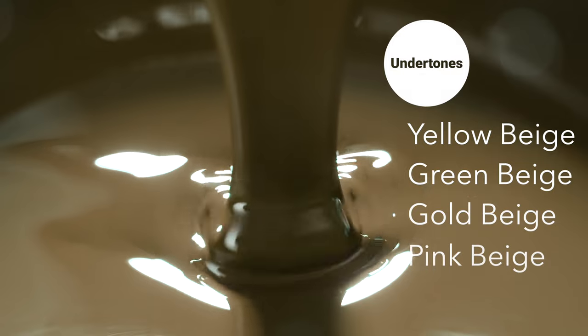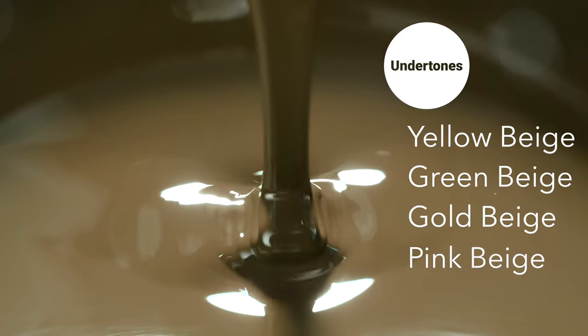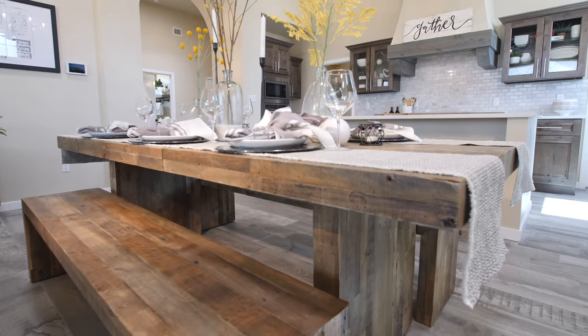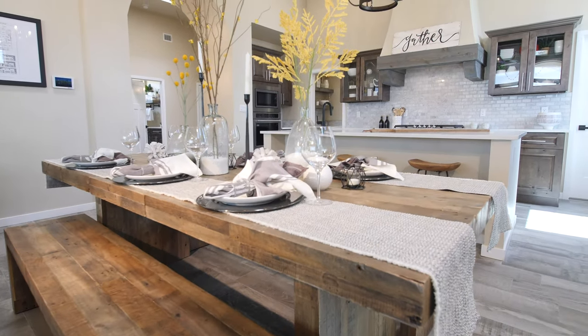If you're trying to find the perfect beige paint color for your home, the most important thing you need to do is identify the undertone of the beige paint color. Beiges come in different undertones, such as yellow beiges, green beiges, gold beiges, pink beiges, and more. All of these undertones will play a key role in how the paint color looks in your home, which is why it's so important to get a sample and compare it with the fixed elements and the type of interior decor you have.